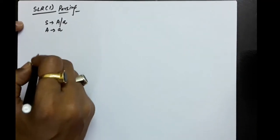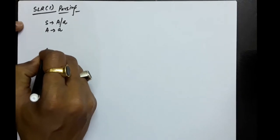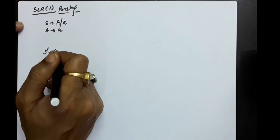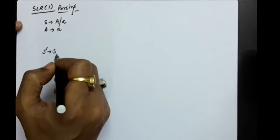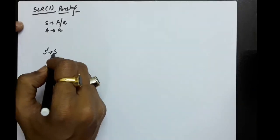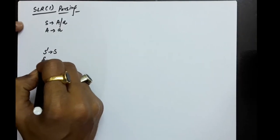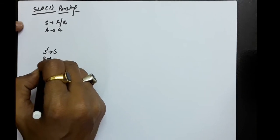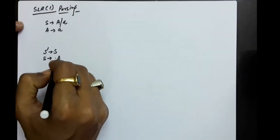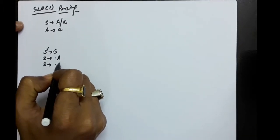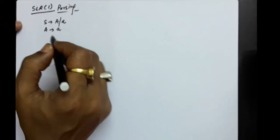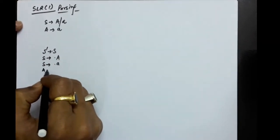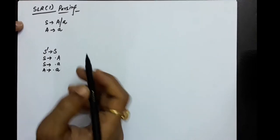We need to find the canonical collection of LR0 items. Taking the augmented grammar, S' produces dot S. Since after the dot there is a start symbol, we write all productions with the dot at the beginning: S produces dot A, S produces dot small a, and since A is a non-terminal after the dot, A produces dot a as well.